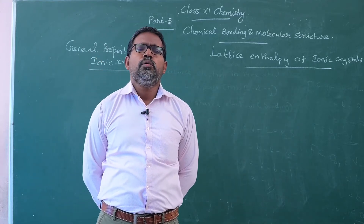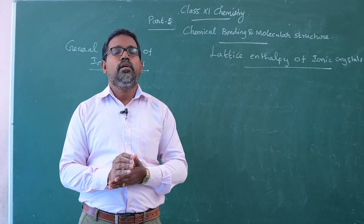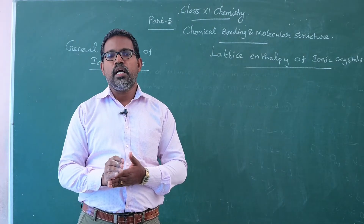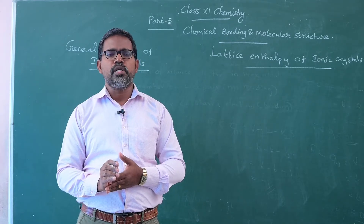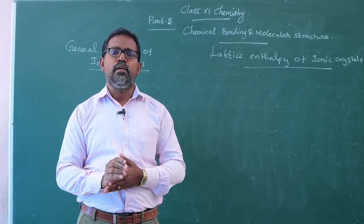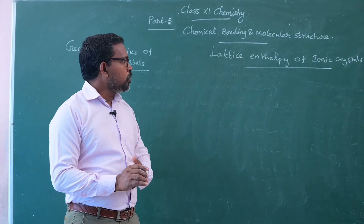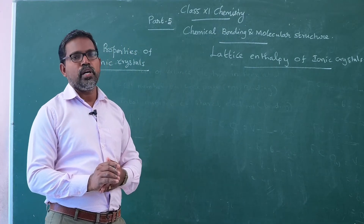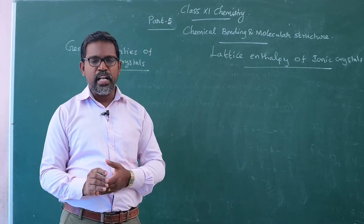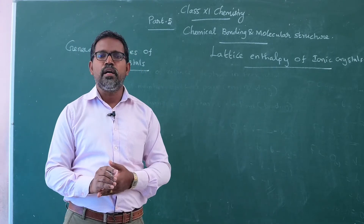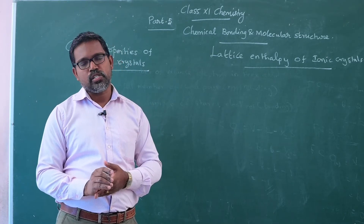I already told you how these ionic crystals are formed. Ionic crystals are formed by cations and anions through mutual force of attraction, or electrostatic force of attraction, between the positively charged cation and negatively charged anion. During the course of the formation of an ionic crystal, a certain amount of energy is released. The energy released during the course of the formation of an ionic crystal is said to be the lattice enthalpy of ionic crystals.